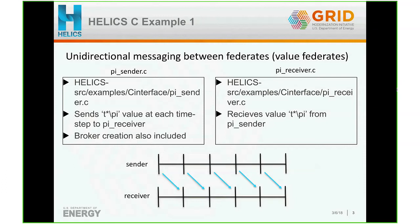The pi_sender at every time step is sending a value to the pi_receiver, and then the pi_receiver receives that value. In the pi_sender.c file, there is also code to create the broker. At the bottom of the slide, I've shown how the values are communicated and the timing sequence. At every time step, the sender sends a value that is received by the receiver at the next time step, because there is a one time step delay. This is just a one-directional messaging where the sender publishes values and the receiver, having subscribed, receives them at the next time step.